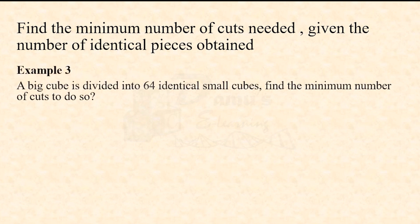Example 3 is the other way around. Here we are given number of pieces obtained; we need to find the minimum number of cuts required to do so. A big cube is divided into 64 identical small cubes - find the minimum number of cuts required. Here what we have to do is divide the given 64 as a product of equal or maximum consecutive numbers. 64 we can write it as 4×4×4.